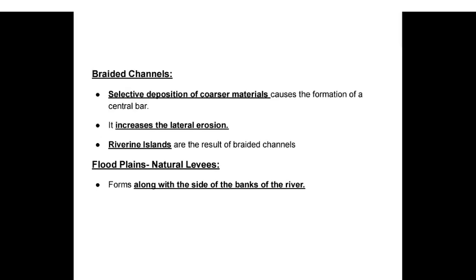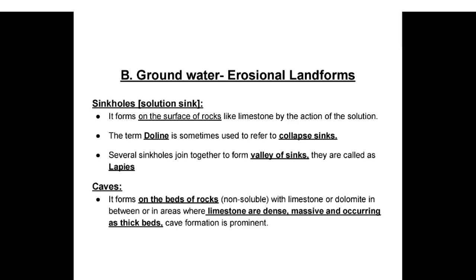Braided channels: selective deposition of coarser materials causes formation of a central bar, increasing lateral erosion; riverine islands result from braided channels. Floodplains and natural levees form along the sides of river banks. Groundwater erosional landforms: sinkholes (solution sinks) form on the surface of rocks like limestone by the action of solution; the term 'doline' refers to collapse sinks; several sinkholes joining together form a valley of sinks, also called lapies. Caves form on beds of non-soluble rocks with limestone or dolomite in between, where limestone is dense, massive, and occurring as thick beds.